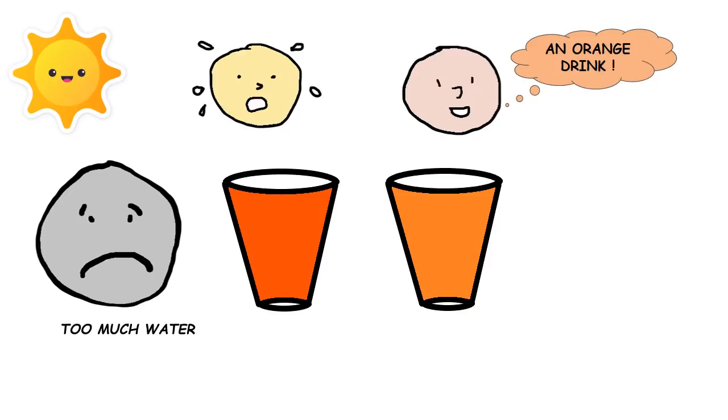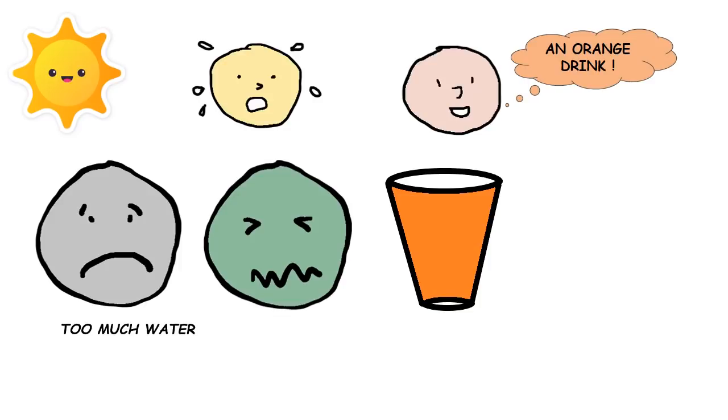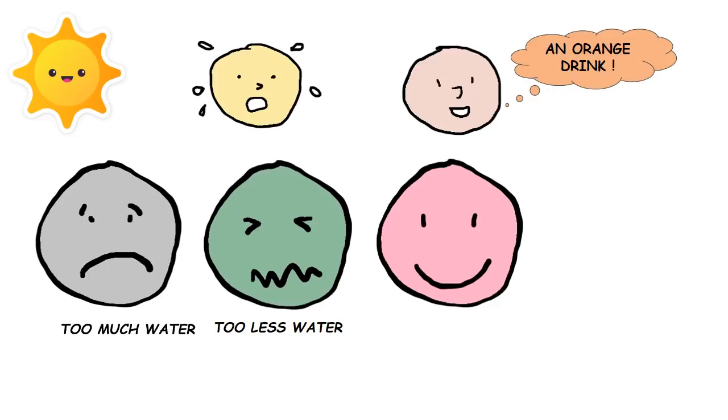When you take a sip from the drink prepared by the second friend, you find it too sweet and too sour. He must have added too little water here. Finally, when you take a sip from the third glass, you find it just right. So this time your friend must have added the exact required amount of water to make it right.